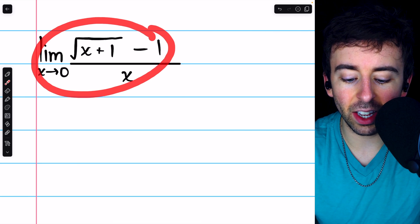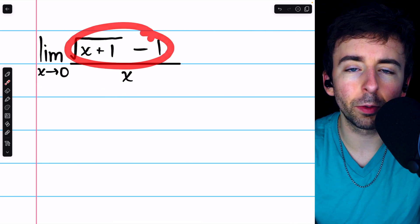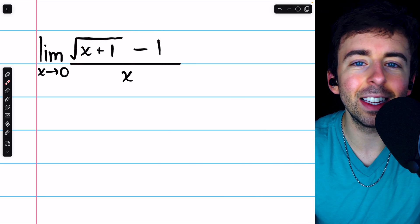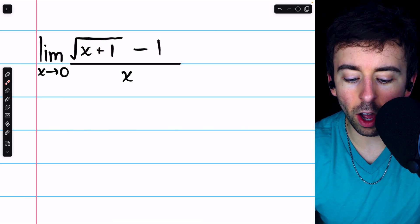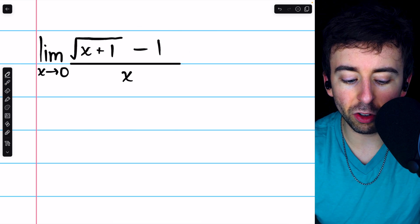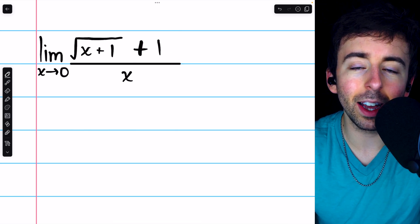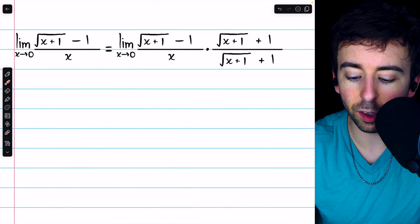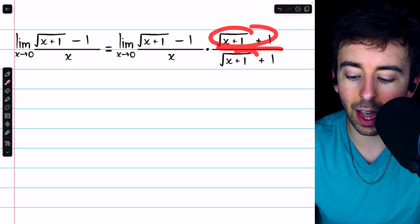In a situation like this, where we have a sum or difference of terms and one of them is a square root, using the conjugate is often useful. The conjugate of this term is just itself, but with a plus instead of a minus. And what we'll do is multiply this expression by the conjugate divided by the conjugate.